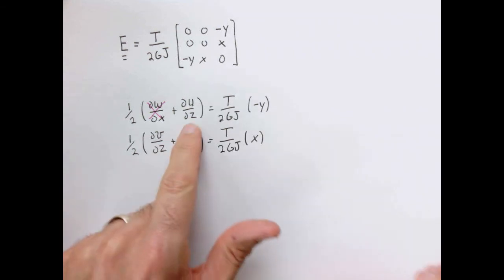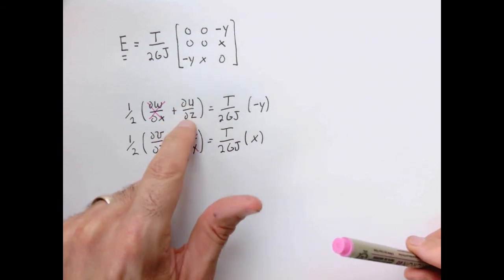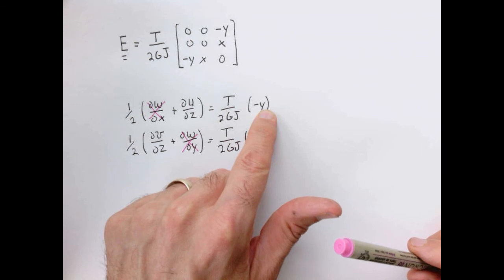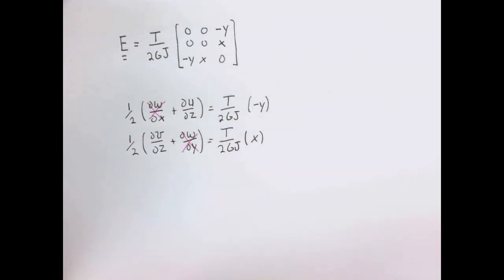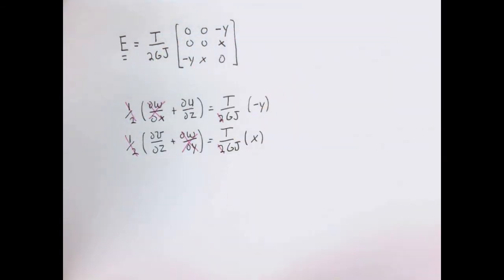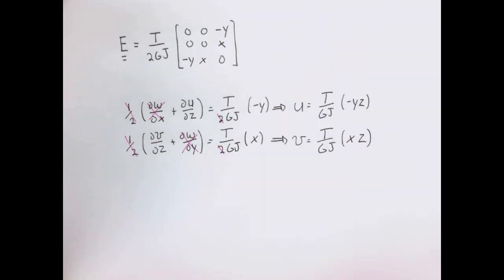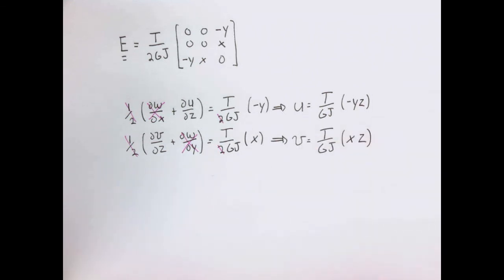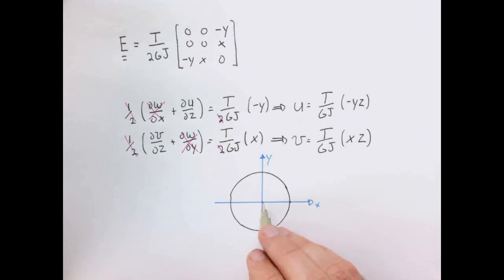What we're left with is a very easy equation to integrate: the derivative with respect to z equals this number, which has no dependence on z, only the y coordinate — so very easy to integrate. We cancel the factors of two and simply integrate. This tells us the displacement field in the plane, u and v. We have to remember this result is only good for small strain values.